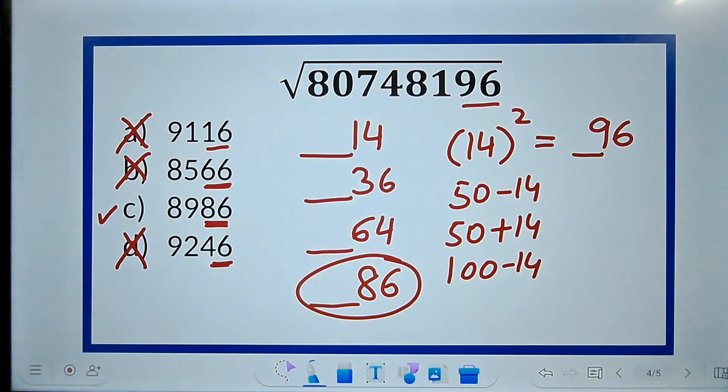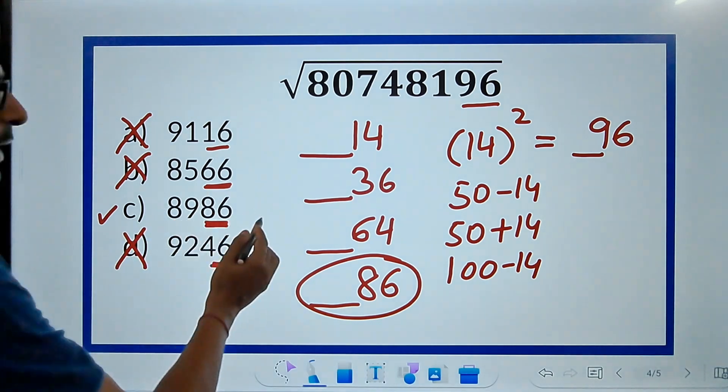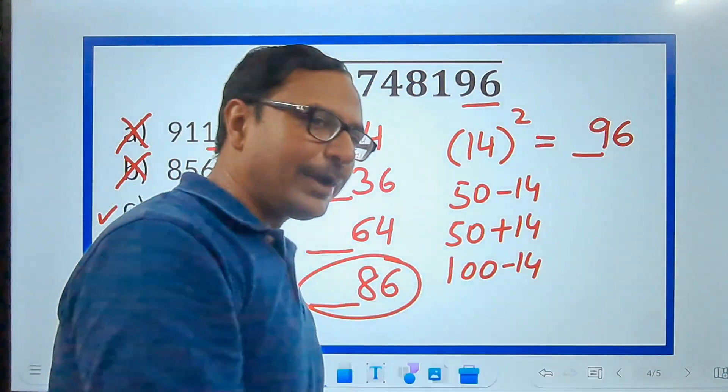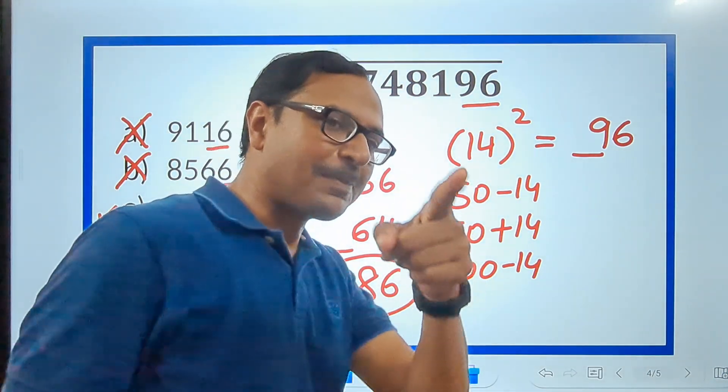And check. Pick up your calculator and check. 8986 square. Is it 80748196? And you will be surprised to see the result.